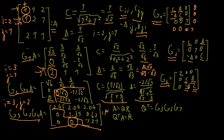Remember that A equals QR and Q-transpose times A equals R. We have already found our R. To find Q, we know that Q-transpose equals G3 times G2 times G1. Reading it the other way: Q equals G1 times G2 times G3 transposed, so you can find Q by taking the transpose of everything, and that gives you the complete QR decomposition of your matrix.